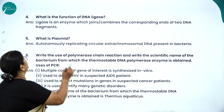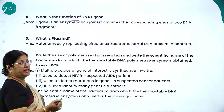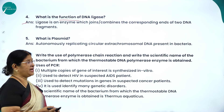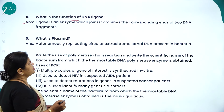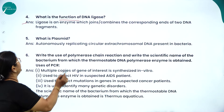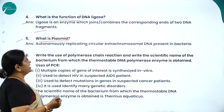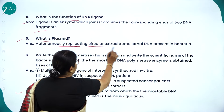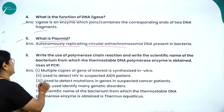DNA ligase is an enzyme which joins or combines the corresponding ends of two DNA fragments — it is called the molecular stitcher. A plasmid is the autonomously replicating circular extra-chromosomal DNA present in bacteria.